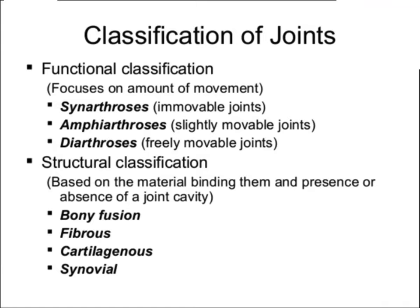Function means how movable are the two bones when they come together and form that joint. Some joints are synarthrotic and the bones do not move when they are joined together. Some are amphiarthrotic and the bones are slightly movable. And then some are diarthrotic where they are freely movable. Our freely movable joints are synovial joints — all synovial joints are diarthrotic.